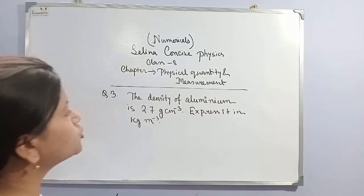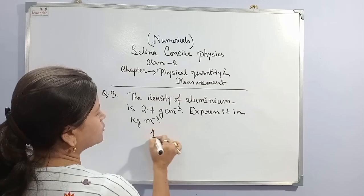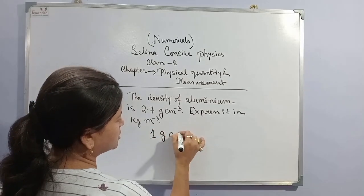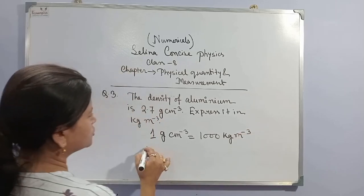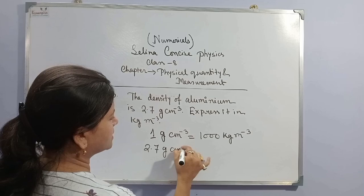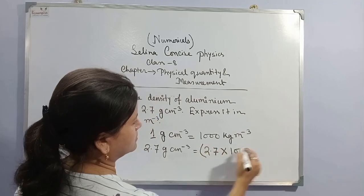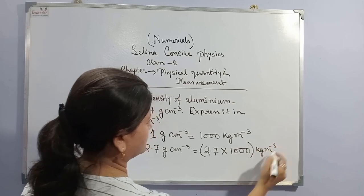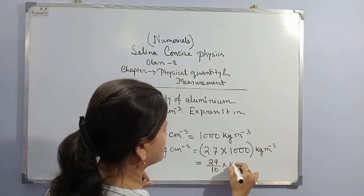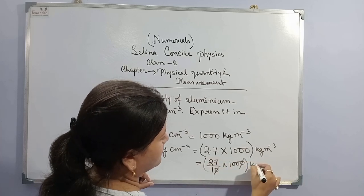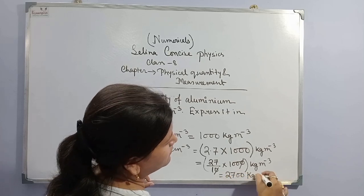Question number 3: the density of aluminium is 2.7 gram per cubic centimetre. Express it into kg per cubic metre. We know that 1 gram per cubic centimetre equals to 1000 kg per cubic metre. So 2.7 gram per cubic centimetre equals to 2.7 multiplied by 1000. Remove the decimal: 27 divided by 10 × 1000, the zeros cancel. So the answer is 2700 kg per cubic metre.